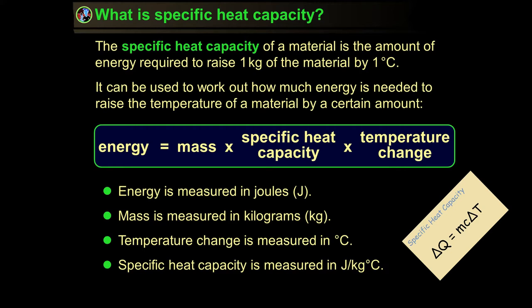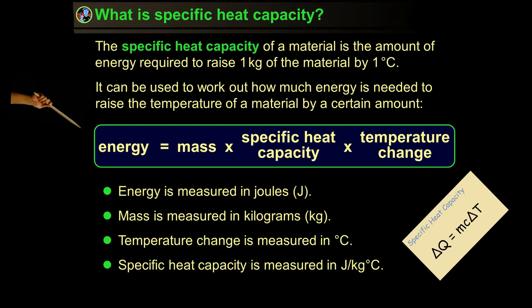The specific heat capacity of a material is the amount of energy required to raise one kilogram of material by one degree Celsius. It can be used to work out how much energy is needed to raise the temperature of a material by a certain amount. The formula is: energy equals mass times specific heat capacity times temperature change.